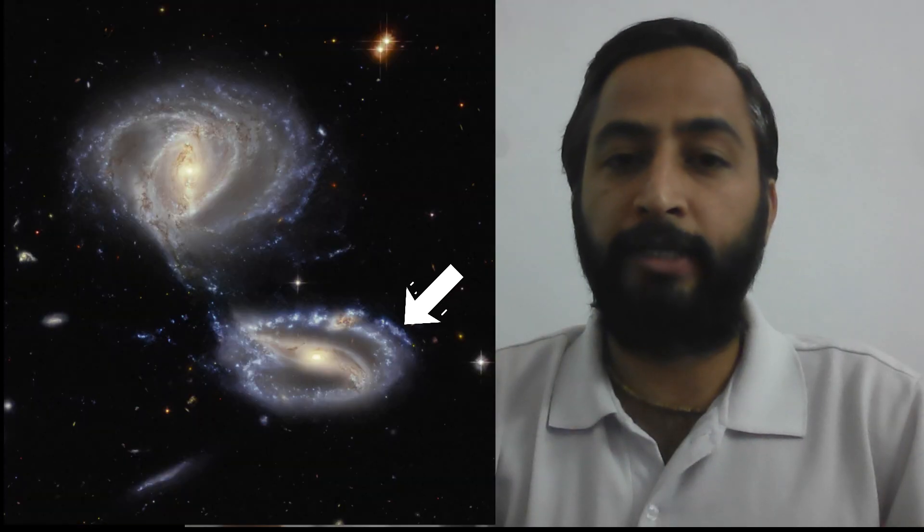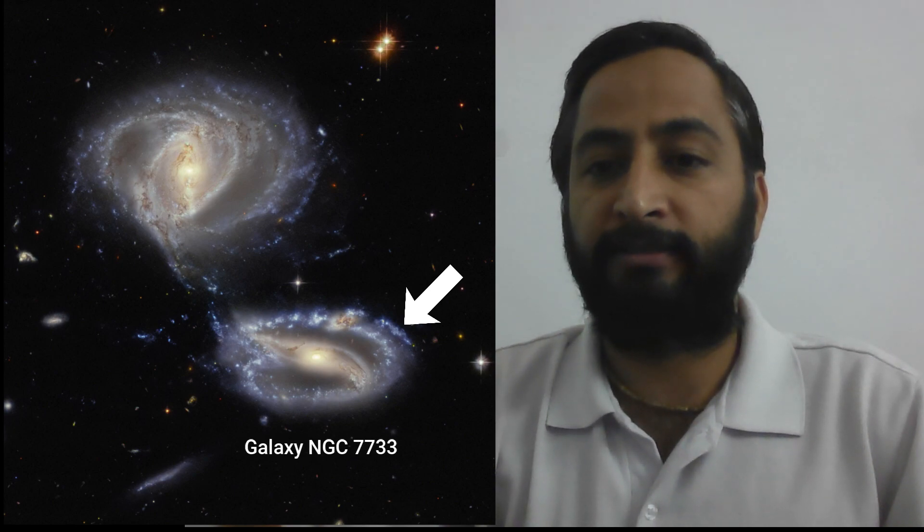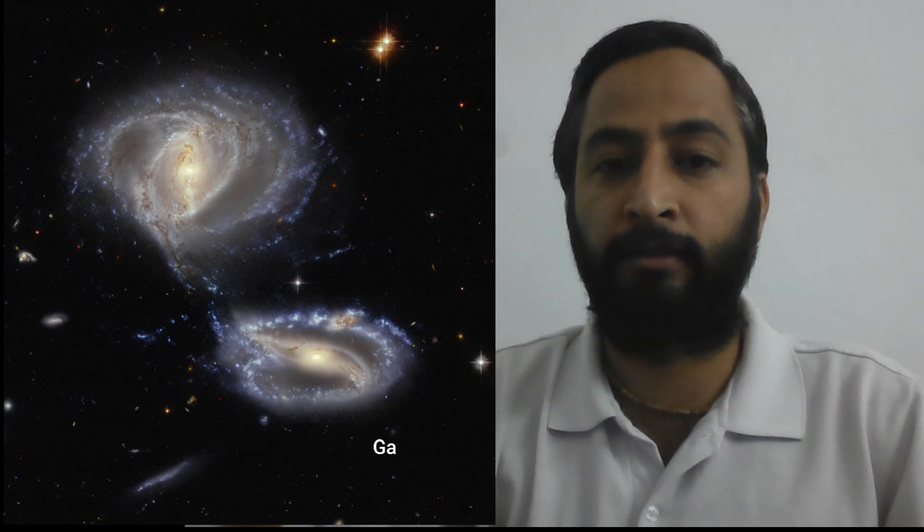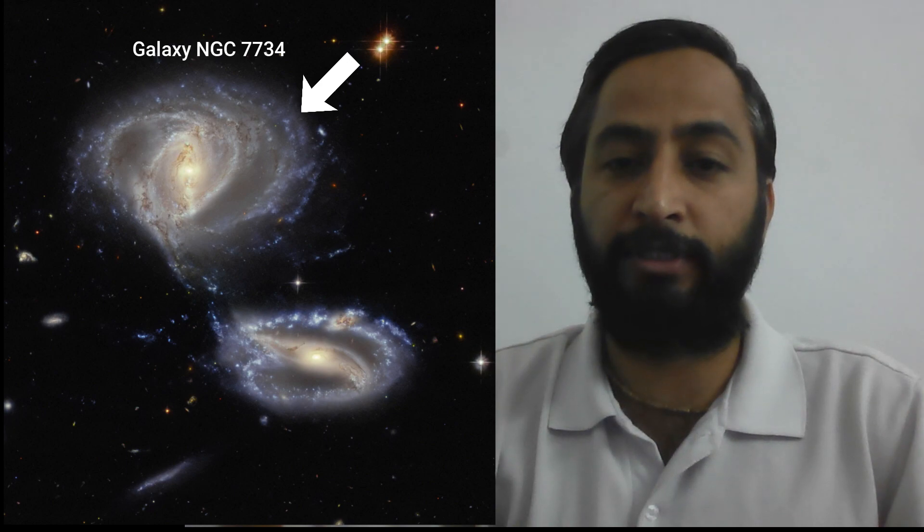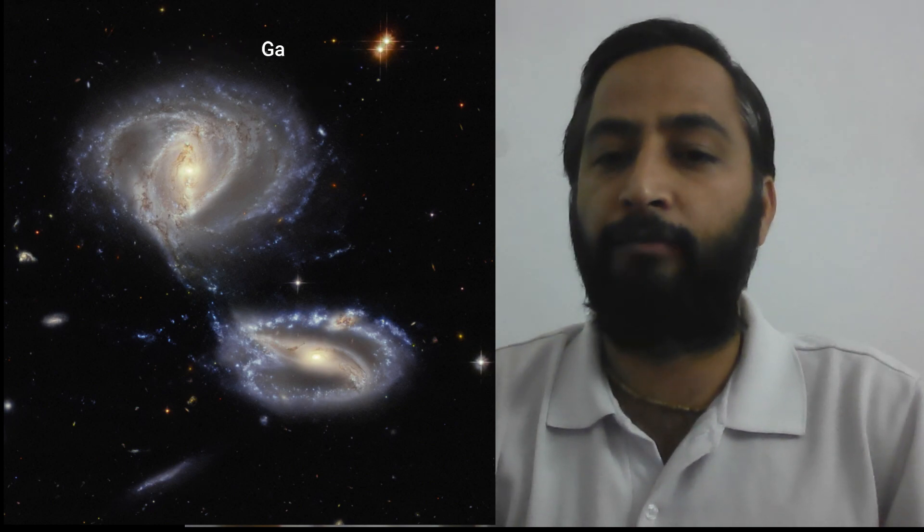The two clearly defined galaxies are NGC 7733, which is smaller and at the lower right, and the second one is NGC 7734, which is larger and at the upper left.